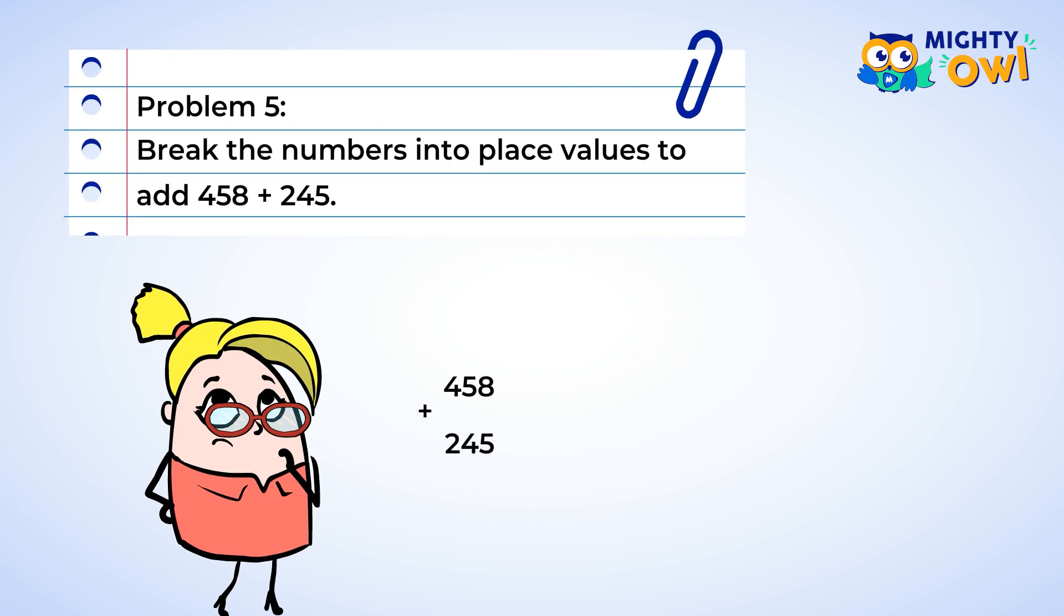Let's start by breaking four hundred fifty-eight into place values. That means we have four hundred plus fifty plus eight. Now we can break two hundred forty-five into place values also. Two hundred plus forty plus five. Let's add up those values. Eight plus five is thirteen. That's different. Thirteen is one ten and three ones.